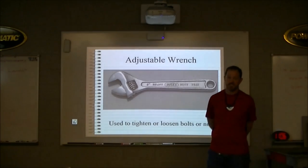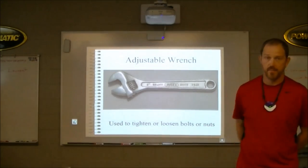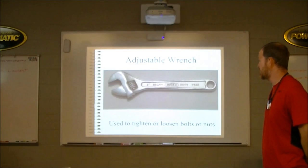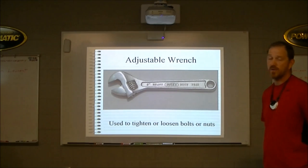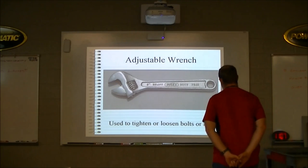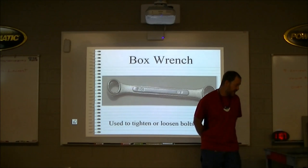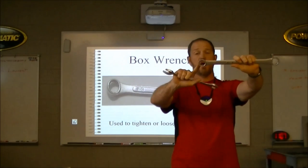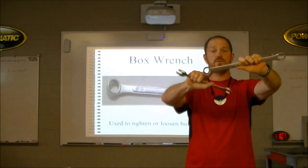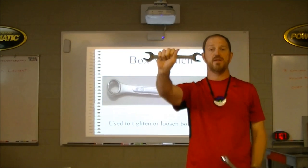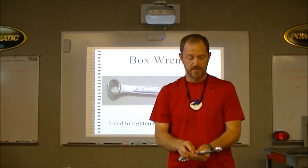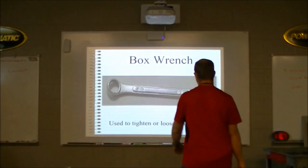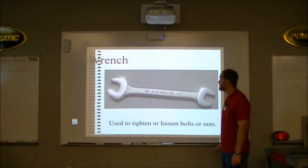An adjustable wrench is also called a crescent wrench after the main manufacturer. An eight-inch adjustable wrench is used to tighten or loosen bolts. There are also two types of fixed wrenches: an open-ended wrench, which leaves one end open, and a closed-end wrench, which completely encircles the nut or bolt. The open-ended wrench is often more convenient because it's easier to take off, but both have their uses.